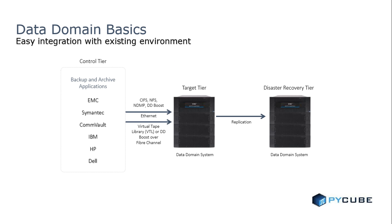I'll introduce you to the Data Domain storage system and move from the outside in. This is a picture of what you would see in a Data Domain deployment. A Data Domain appliance is a storage system with shelves of disks and a controller. It's optimized first to backup and second to archive applications, and supports most of the industry-leading backup and archiving applications. I'll talk primarily about backup in this discussion and then get to archiving later in the presentation. The list on the left is composed primarily of leading backup applications, not only EMC's offerings with EMC Networker, but also Symantec, Commvault, and so on.